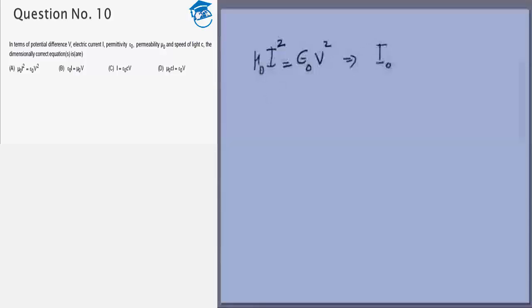So this gives me I² by c² is equal to ε₀² V². These are all dimensional equations by the way. Which gives me I is equal to c ε₀ V, right.